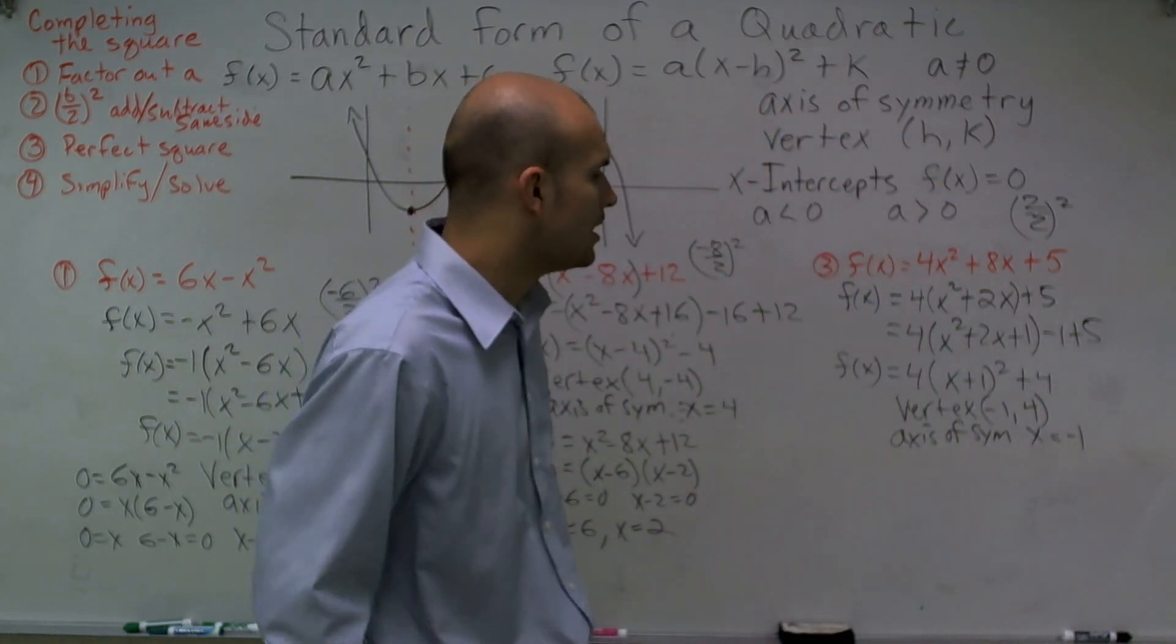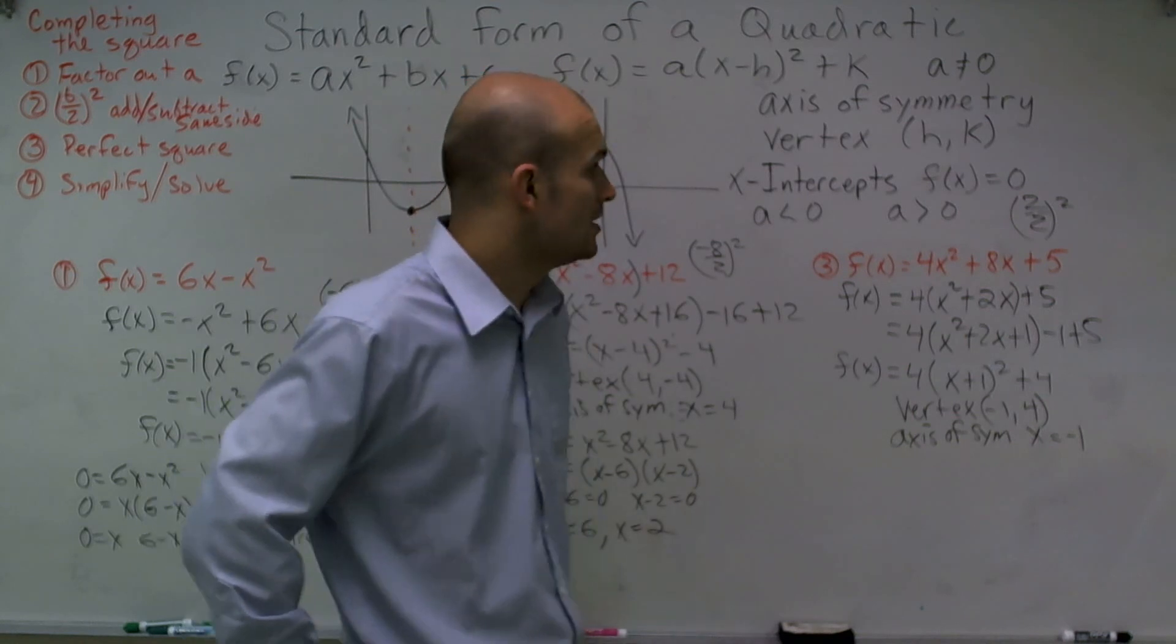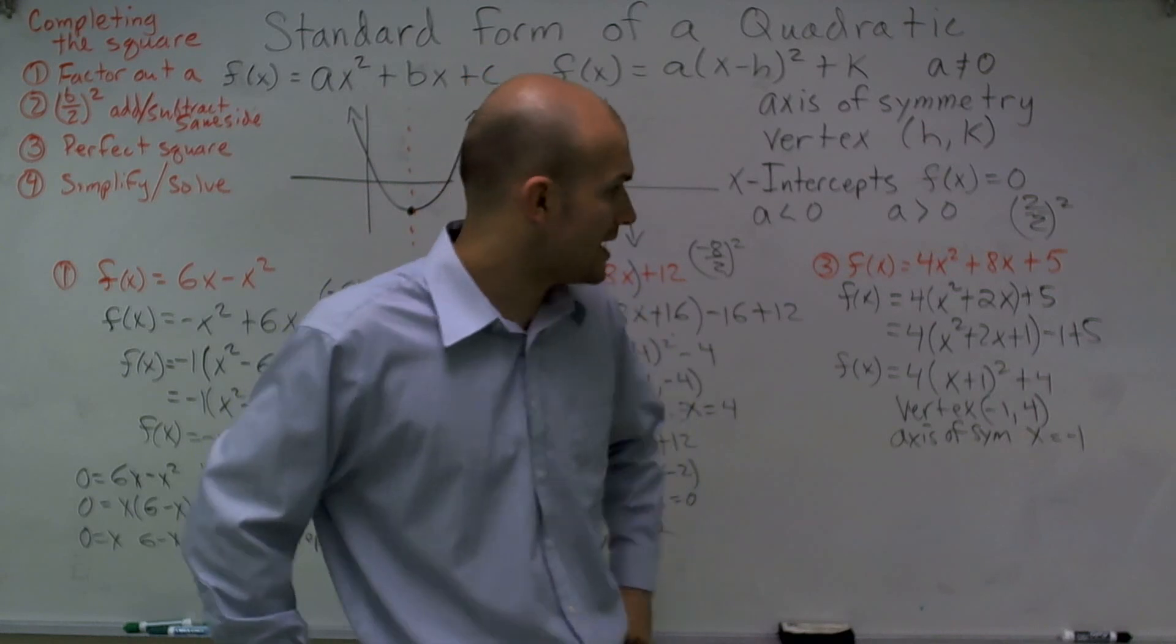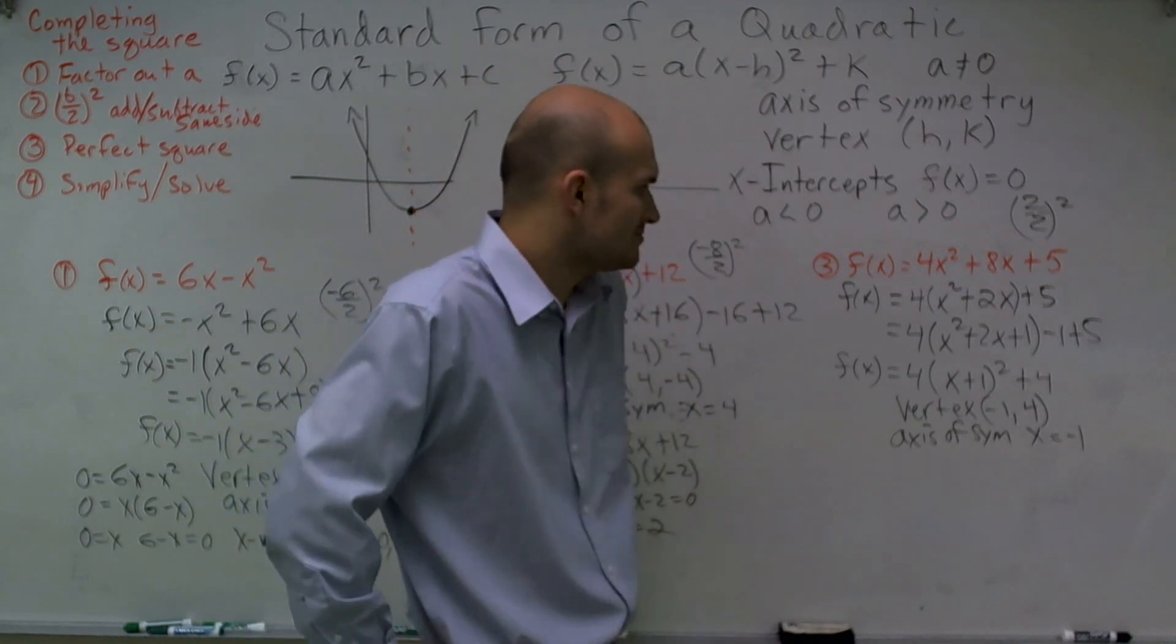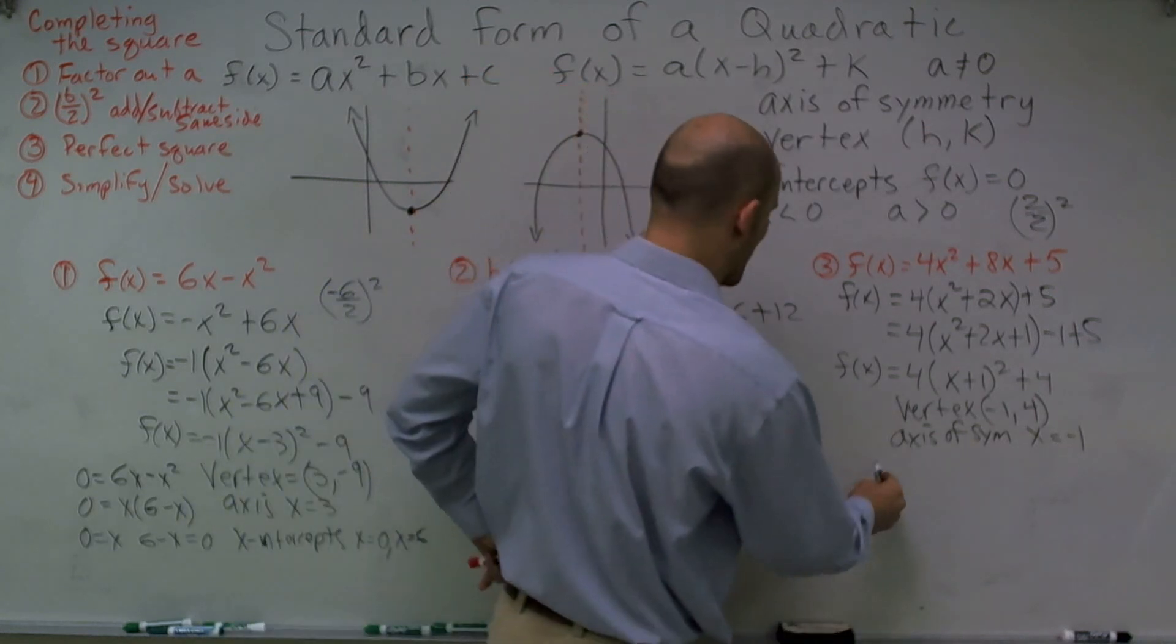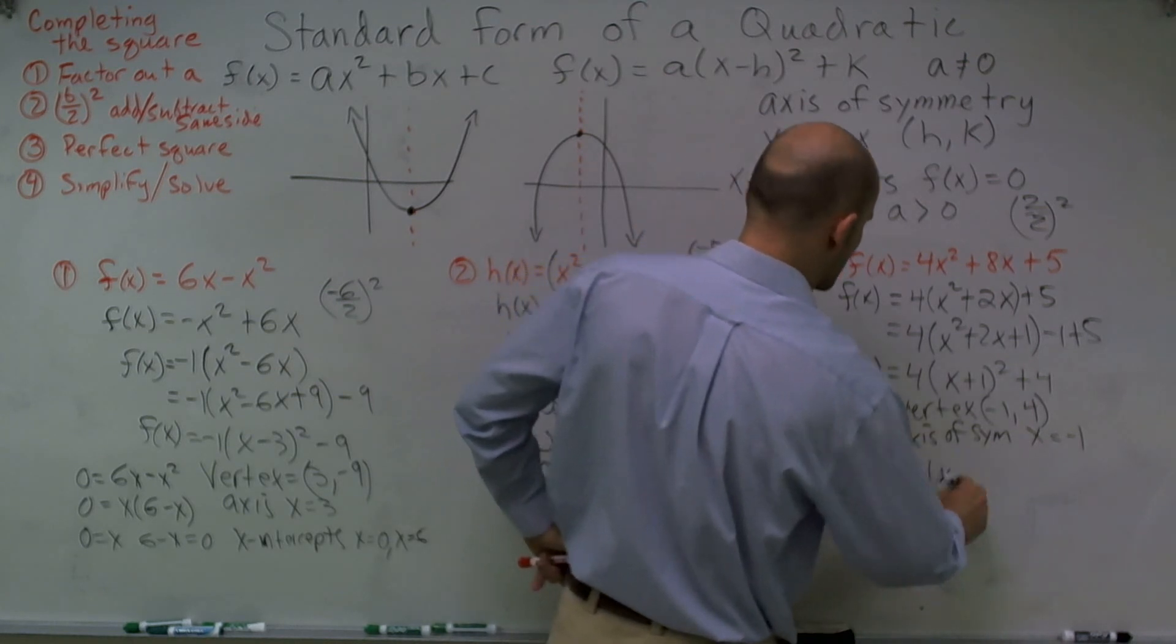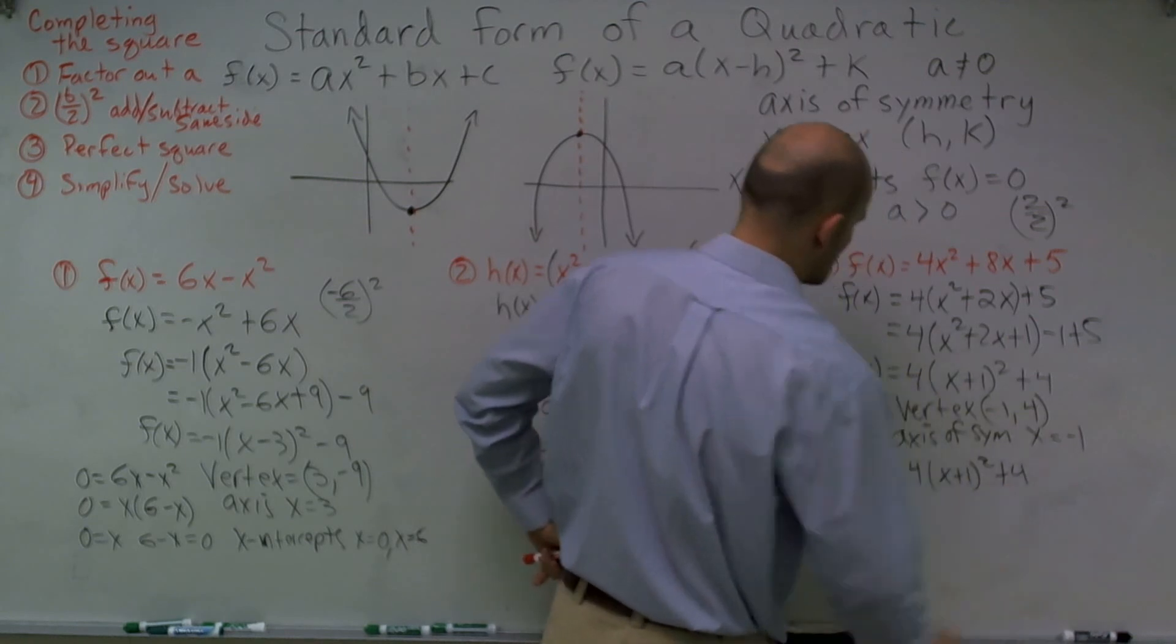And to solve this, I could look at factoring. We could easily go ahead and look at the factors and see if this is factorable or not. But to make this a little bit quicker, we can just solve for our completed square. So we could say 0 = 4(x + 1)² + 4.